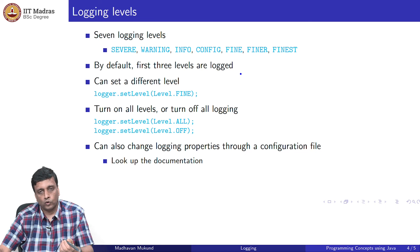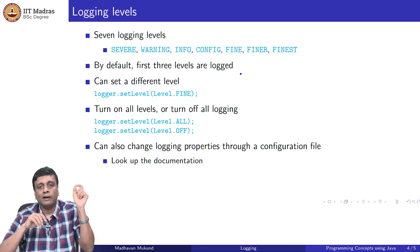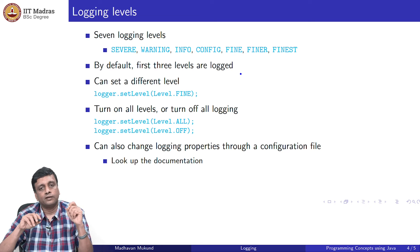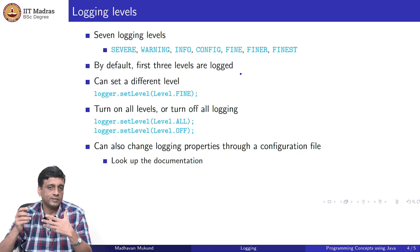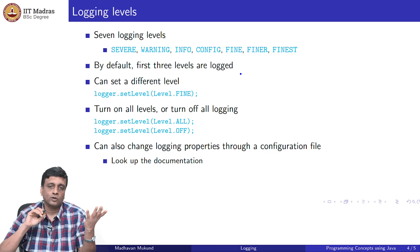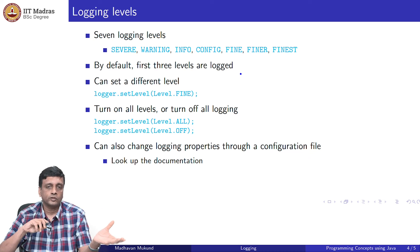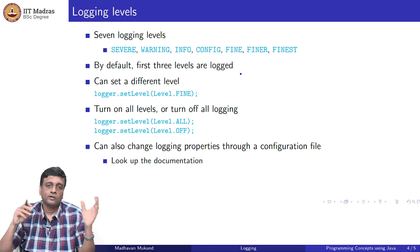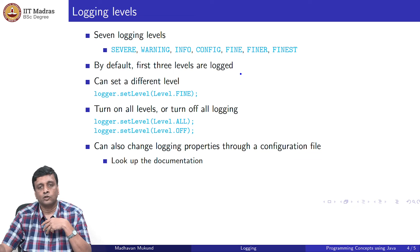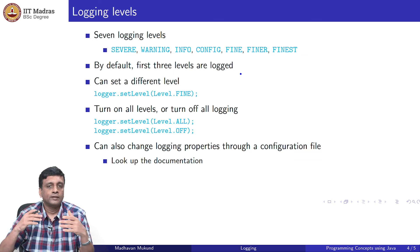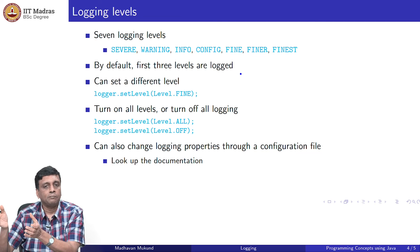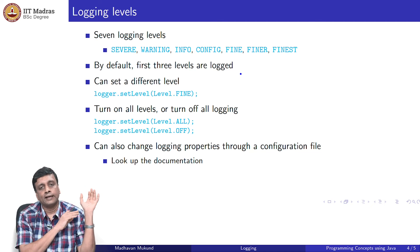This is all through the code. If I want to change the level of logging, I have to go back, edit the code, recompile it, and run it. It is not as convenient as, for example, our assert mechanism, where we kept all the asserts in the code and then externally could say which asserts to turn on or off — turn all on, turn on asserts only in this class, turn on asserts only in this package. That was something that happened at runtime without requiring us to go back and edit the code.